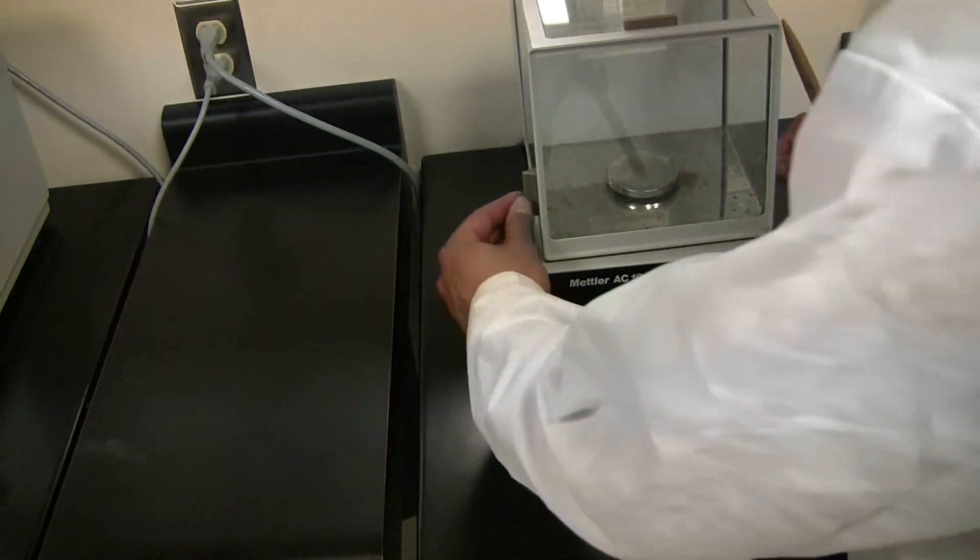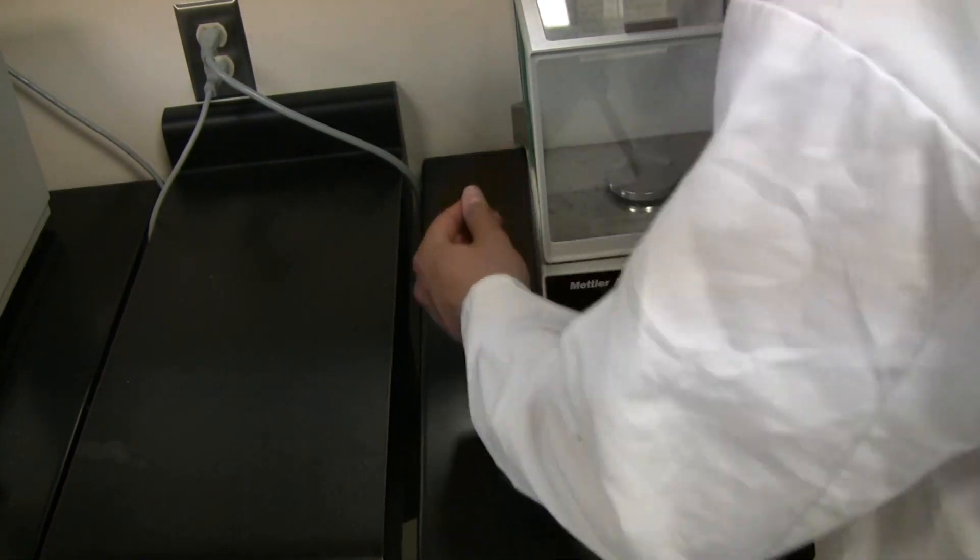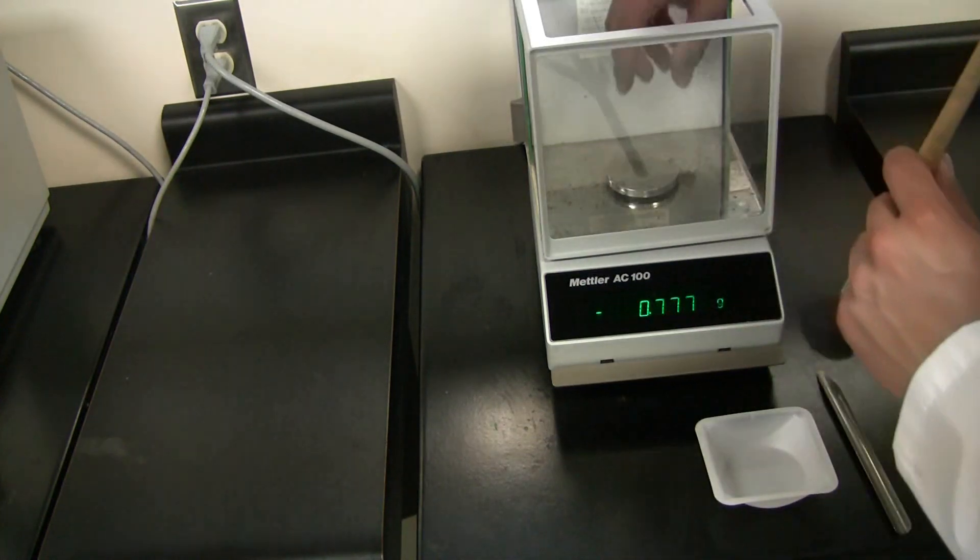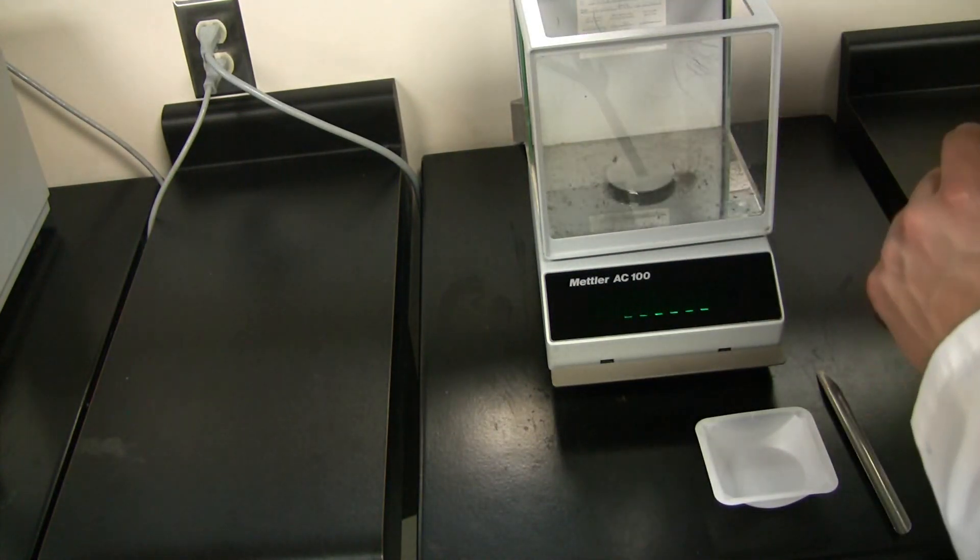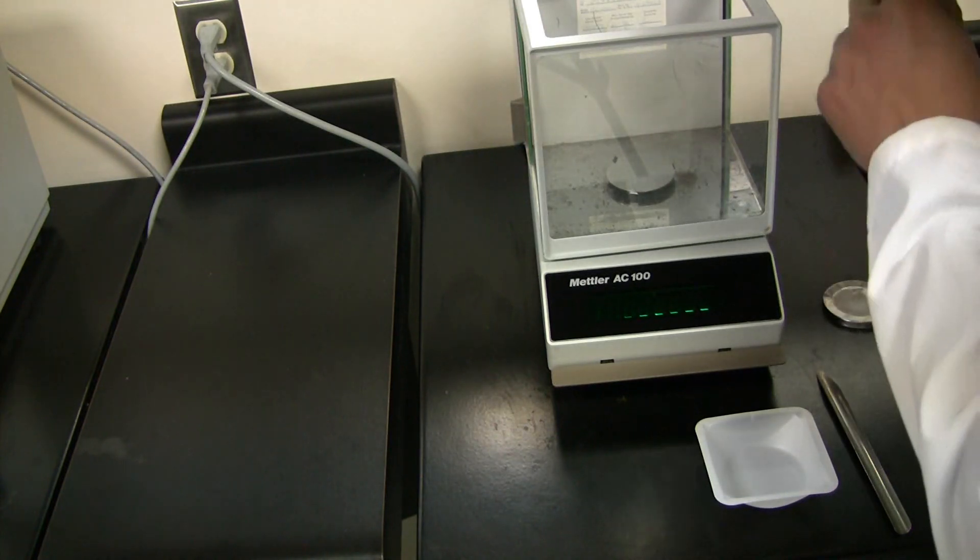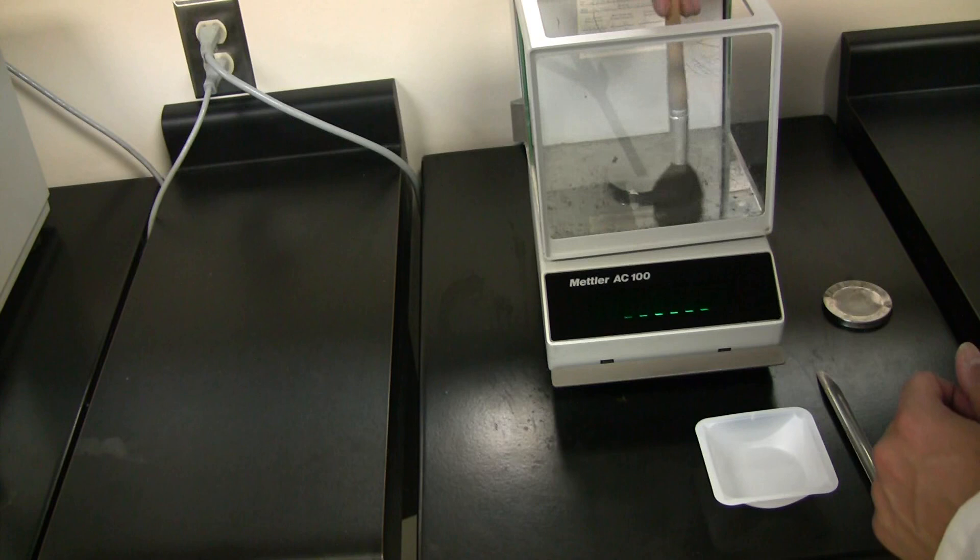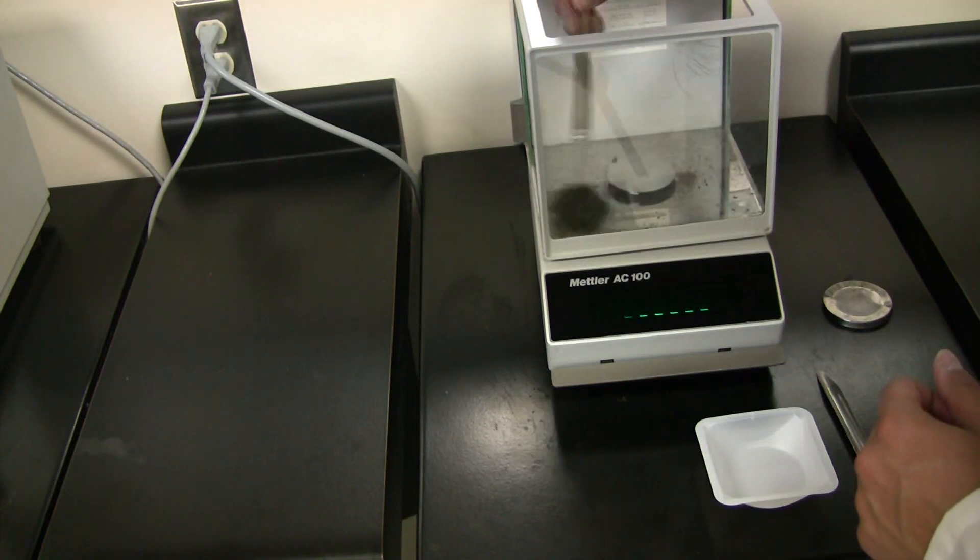Start by opening all three sides of the analytical balance. Take your brush and gently brush off the top, then remove the top plate and continue brushing very lightly over the sensor and all around to remove any debris that could be present.